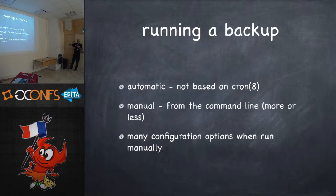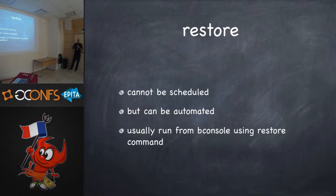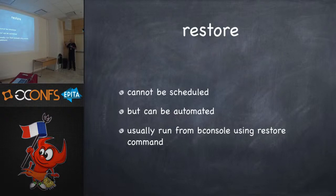It's not based on cron. You can run a backup manually, and many configuration options can be set when running manually. When you run automatically, it uses the defaults. Restores cannot be scheduled, but they can be automated — for example, by echoing 'run restore' with parameters and piping to B console. You can run that on the client, pipe it to B console, and it backs up that client automatically without prompting.